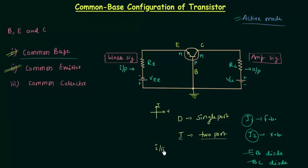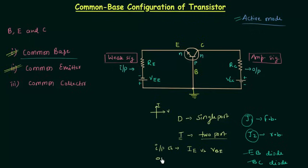In case of input characteristics, we have a plot between the input current and the input voltage. The input current in this circuit is IE, and the input voltage is VBE. In case of output characteristics, we have a plot between the output current IC and the output voltage VCB.